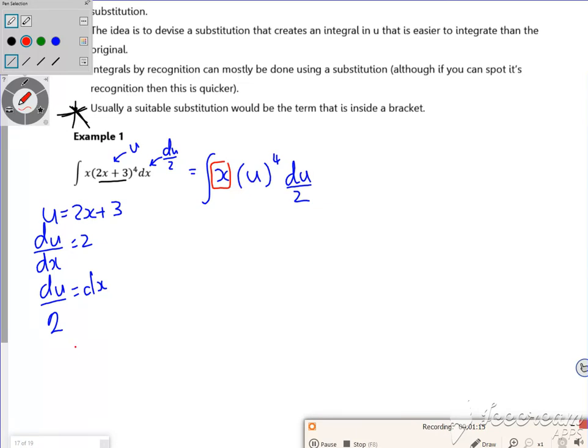The easiest way to do that is to rearrange the u. If I take the 3 and then half it, that's equal to x. So that's my next step now, is to change the x.